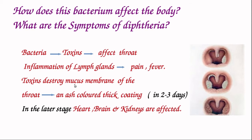Then what happens - the toxins destroy the mucous membrane of the throat. In two to three days, there occurs an ash-colored thick coating - you can see here a thick white coating formed in the throat within two to three days of the infection. In the later stage, it affects the heart, brain, and kidneys.